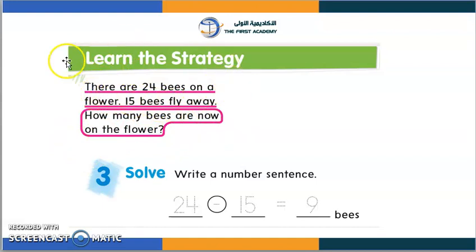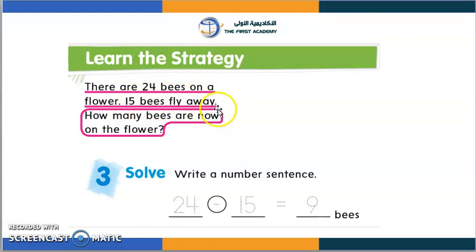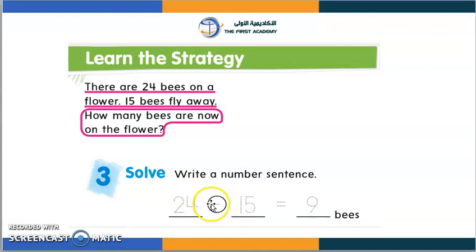Let's read our problem together. There are 24 bees on a flower. 15 bees flew away. How many bees are now on the flower? So, we're going to write 24 first because it's the number that came first. Then we use minus because the bees left or flew away. And then we add 15. So we have 24 minus 15.